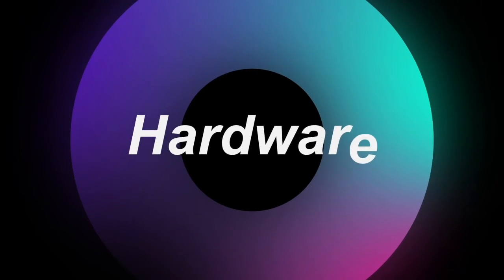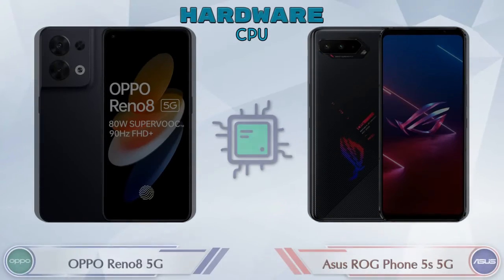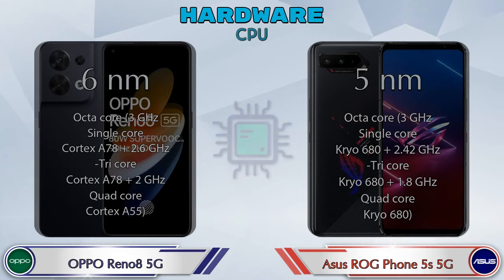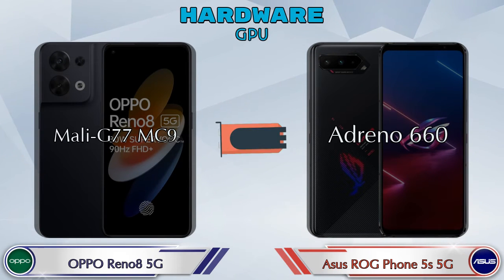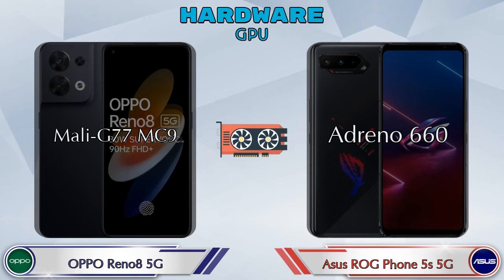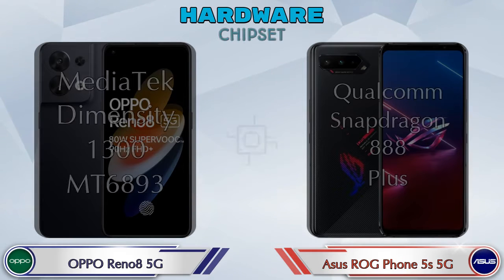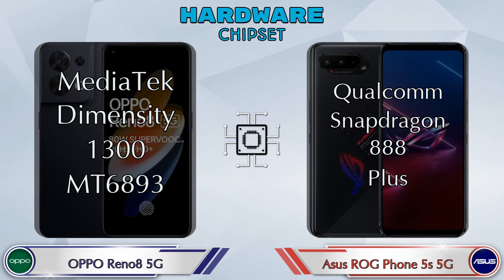First, we talk about the most important part of the phone — hardware. Looking at the GPU, the Reno 8 5G has the Mali-G77 MC9, while the ROG Phone 5S 5G has the Adreno 660. Talking about the chipset, the Reno 8 5G has the MediaTek Dimensity 1300 MT6893.